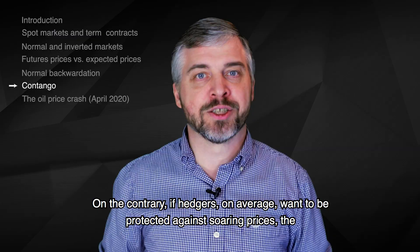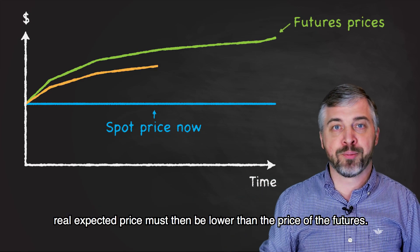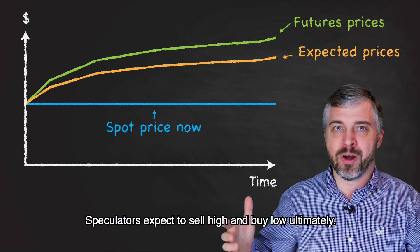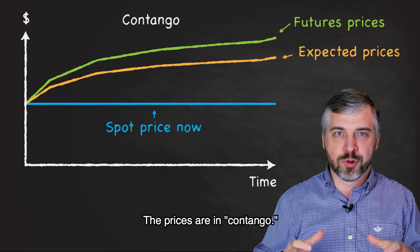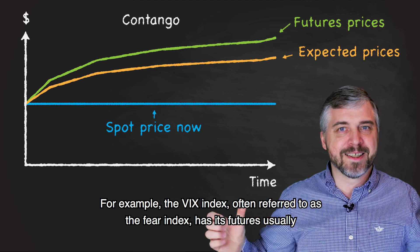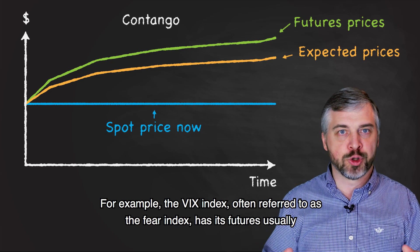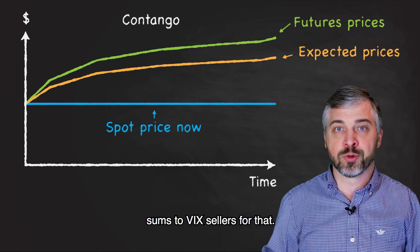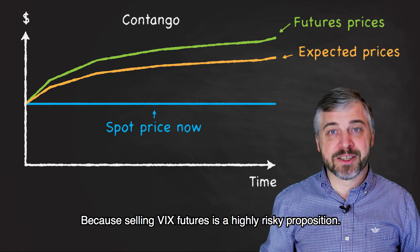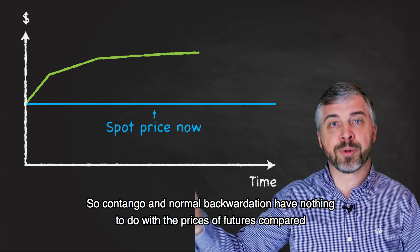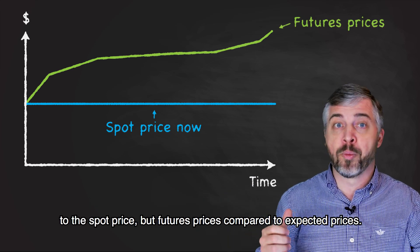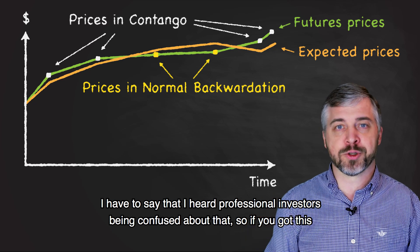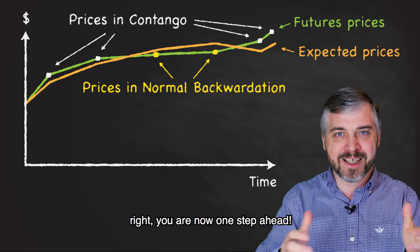On the contrary, if hedgers on average want to be protected against soaring prices, the real expected price must then be lower than the futures price. Speculators expect to sell high and buy low ultimately, and hedgers get the protection they need. The prices are in contango. For example, the VIX index, often referred to as the fear index, has its futures usually in contango. Portfolio managers buying VIX futures to protect their portfolio are effectively paying large sums to VIX sellers for that, because selling VIX futures is a highly risky proposition. So contango and backwardation have nothing to do with the prices of futures compared to the spot price, but futures prices compared to expected prices. I have to say that I have heard professional investors being confused about that, so if you got this right, you are now one step ahead.